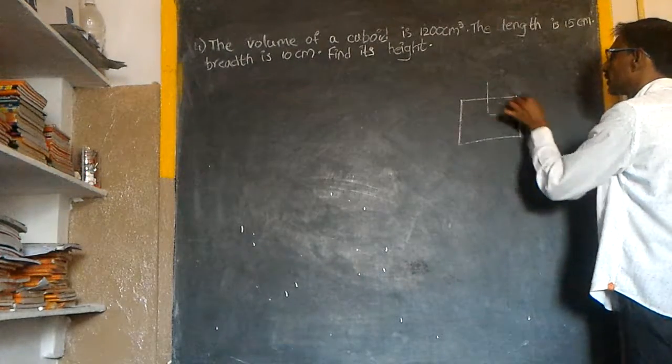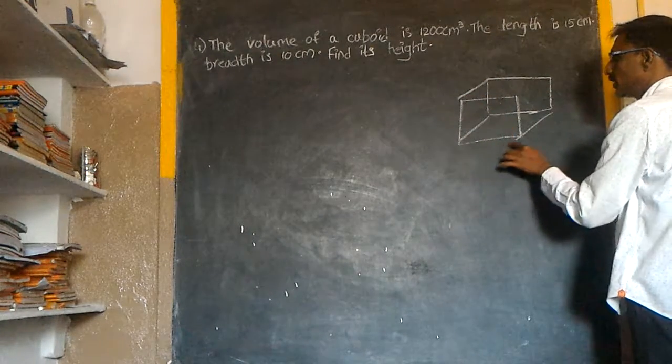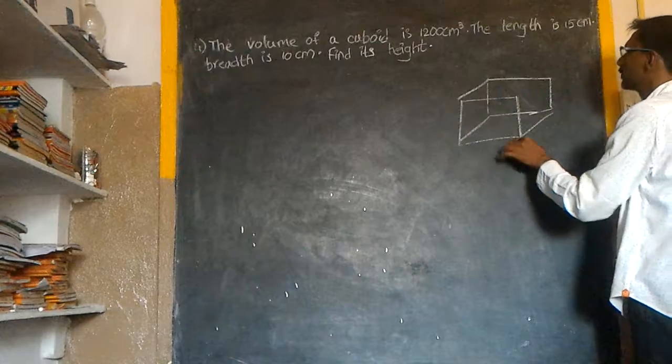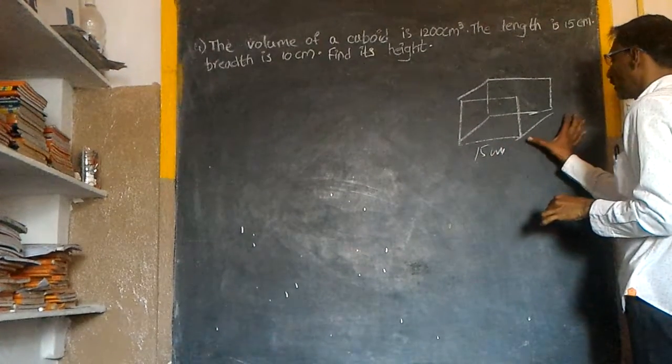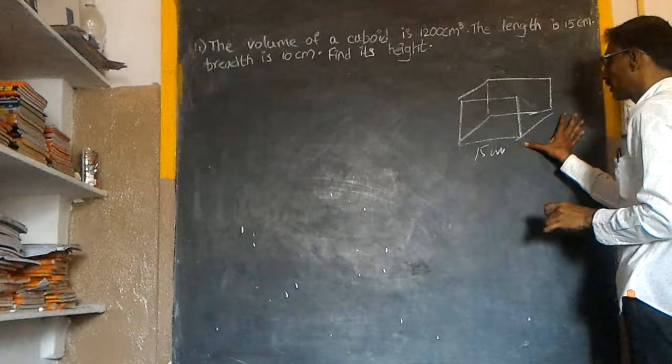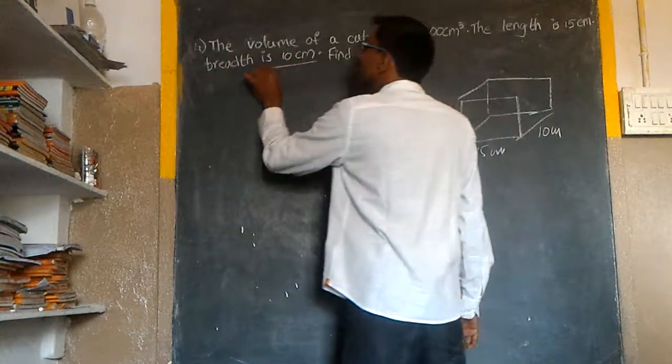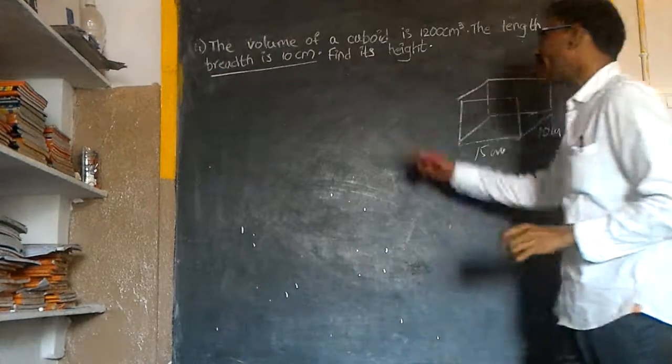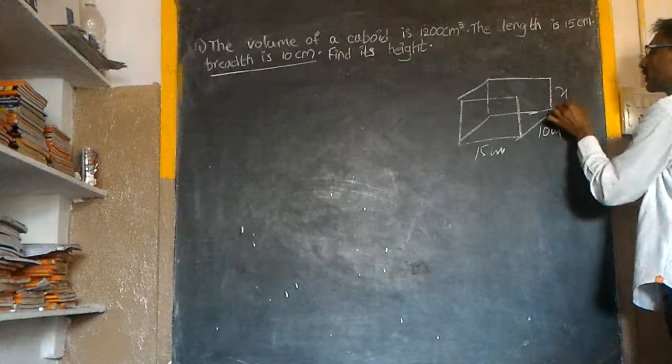This is the cuboid. The height of the cuboid - how do you find the length? Length, ten centimeters. The width, ten centimeters. Find its height. Height is X.